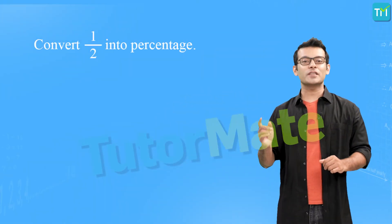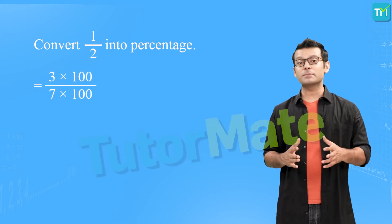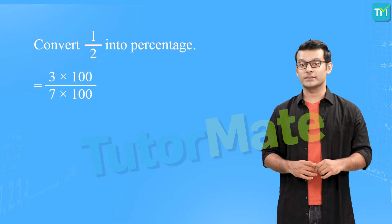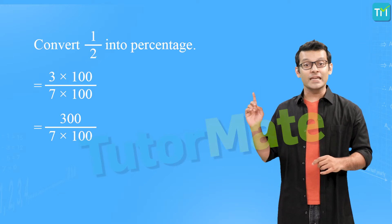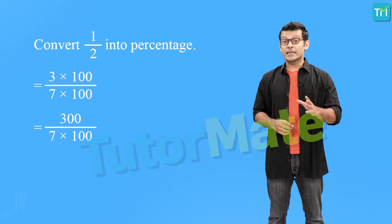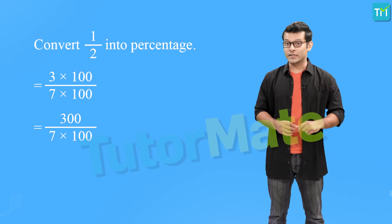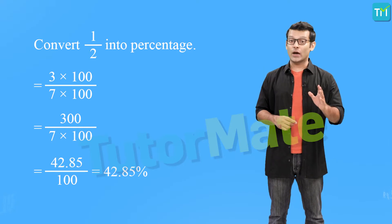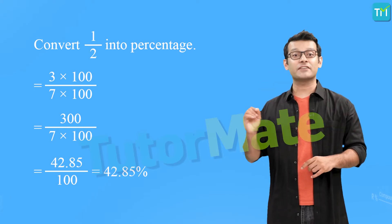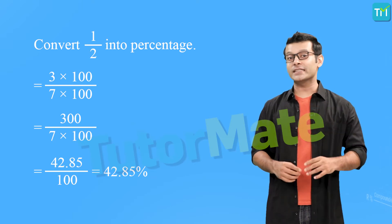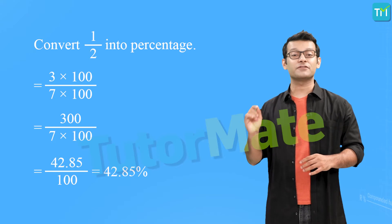Calculating the percentage when given quantities to compare is a method of comparison, especially when the given quantities are ratios or fractions, since every ratio or fraction can be converted to a percentage. For example, to convert 3 by 7 into a percentage, we multiply the numerator and denominator by 100. We get 300 upon 700, and dividing 300 by 7 gives 42.85, so 3 upon 7 equals 42.85 percent.